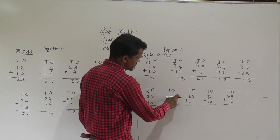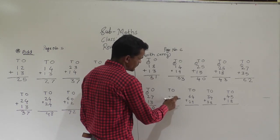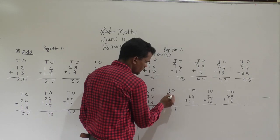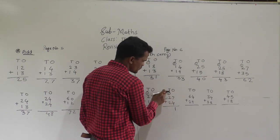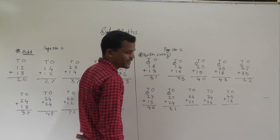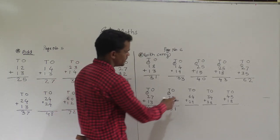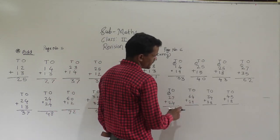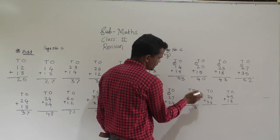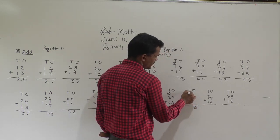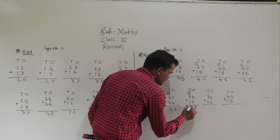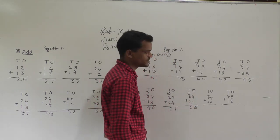Then 27 plus 24: 7 plus 4 is 11 — write 1 here and carry 1. 2 plus 4 plus 1 carry is 5 plus 1 equals 6 — wait, 2 plus 4 is 6... so 51 is the answer. Then 64 plus 29: 4 plus 9 is 13 — write 3 here and carry 1. 6 plus 2 is 8, plus 1 carry is 9. So 93 is the answer.